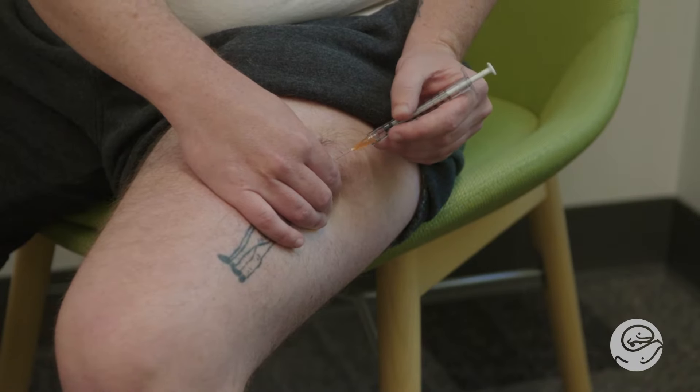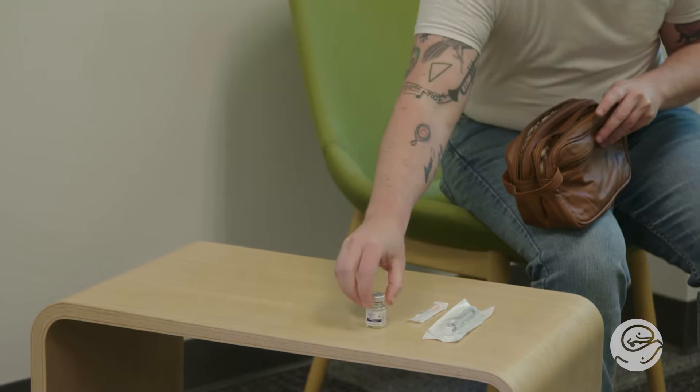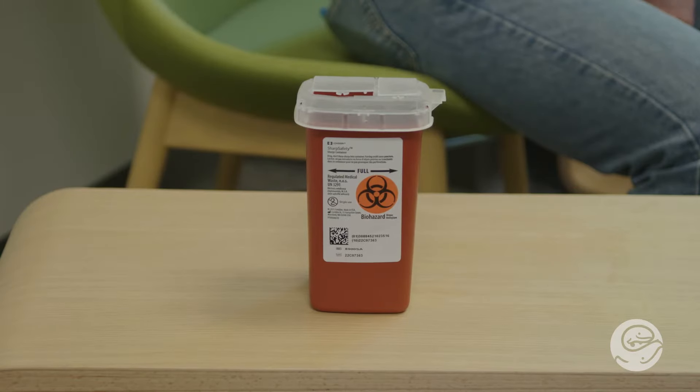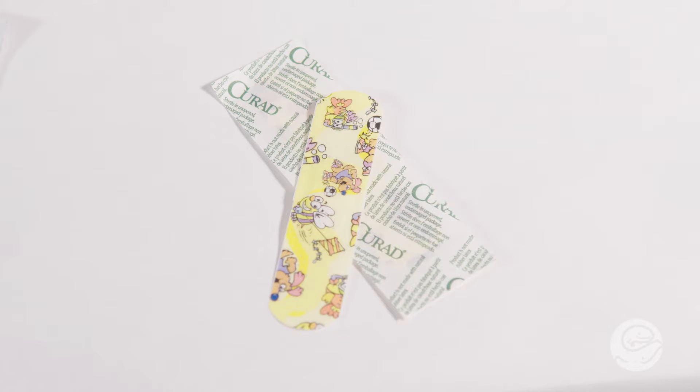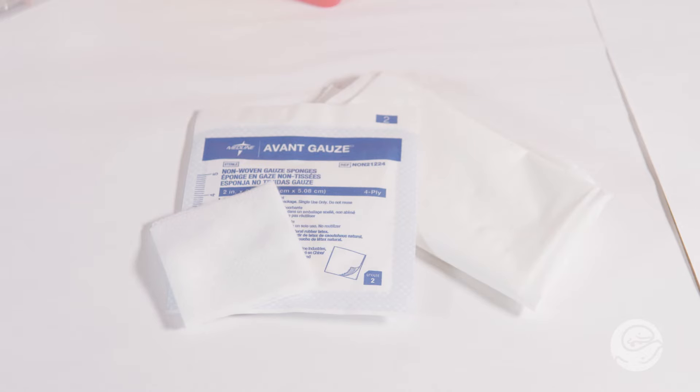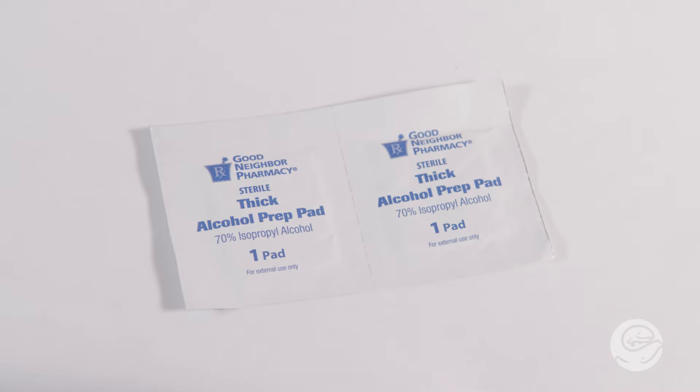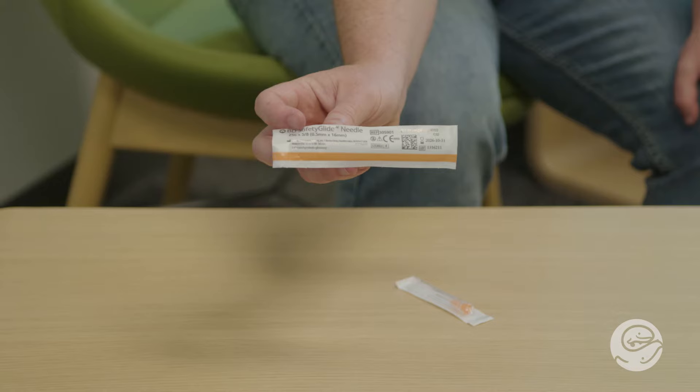Gather your supplies. Begin by gathering your supplies. This may include a sharps bin or puncture-proof container, a band-aid, gauze or cotton ball, two or more alcohol wipes, one for the top of the vial and one for your injection site, a 25 gauge needle that is 5 eighths of an inch long. The gauge is how thick the needle is. Your provider may discuss other needle options depending on your needs.